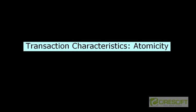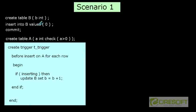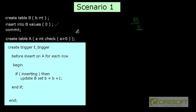Let's consider the first scenario. We have a table B, and in table B we have a column called B of integer type, and we insert a value of zero. So at this point the value of B is zero, and then we have committed. Then we create another table A, and we have a check constraint in the table that the value of A will always be greater than zero.